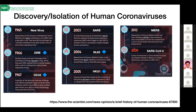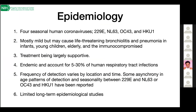As we think about SARS-CoV-2, the question is: how much do we really know about the seasonal coronaviruses that have been with us for at least over 50 years? There are four seasonal coronaviruses: 229E, NL63, OC43, and HKU1. They mostly cause mild symptoms, but occasionally for infants, young children, elderly, and immunocompromised individuals, you do have life-threatening bronchiolitis and pneumonia. There are no vaccines or antivirals, so treatment is largely supportive.